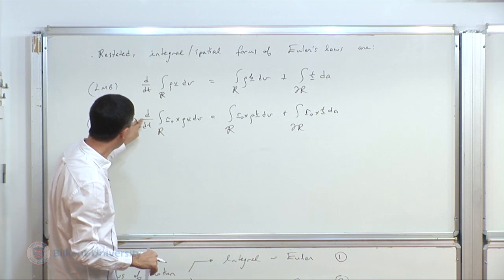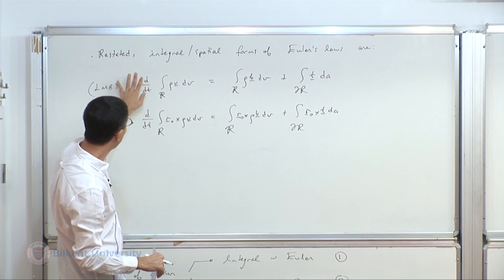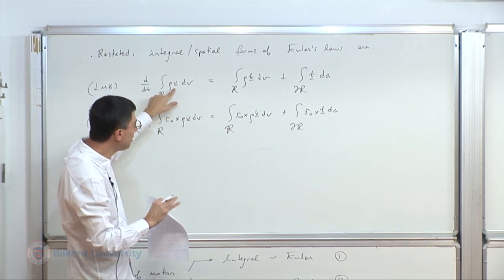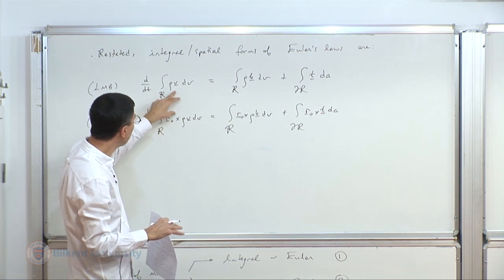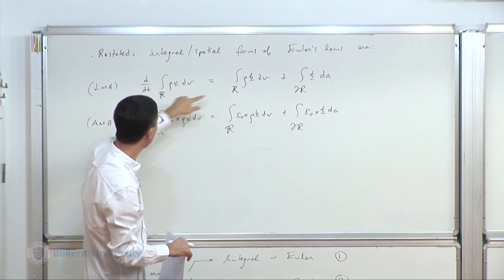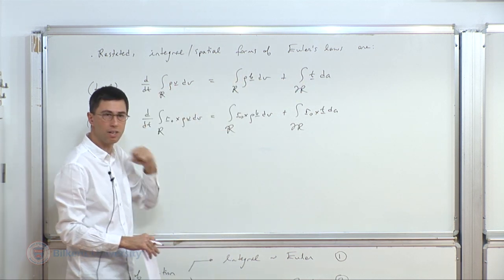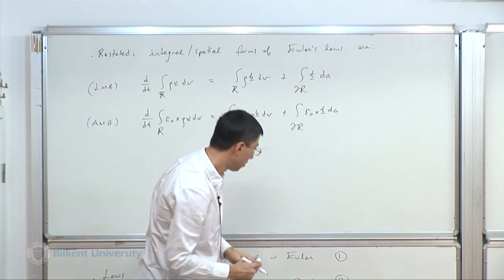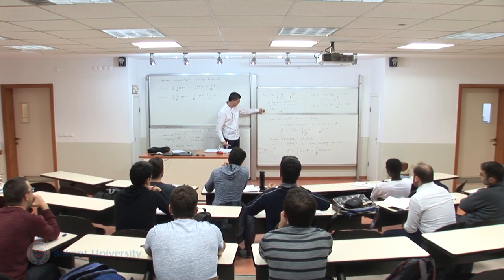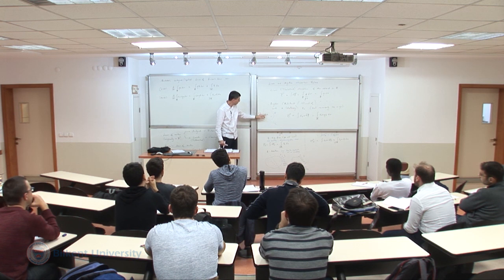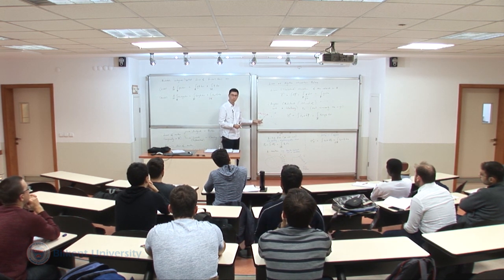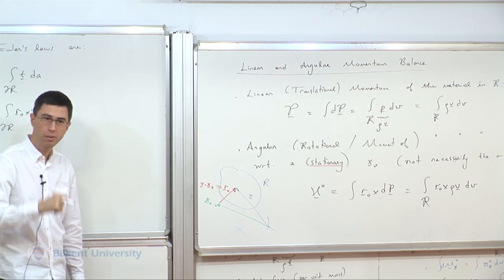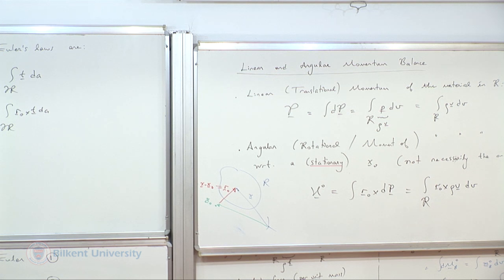Note that the time derivative is outside the integral over the spatially evolving domain. The angular momentum equation does not immediately follow from linear momentum by simply inserting r0, because r0 is not constant — it is x minus x0 and changes as the body moves, so it acts as a changing moment arm.